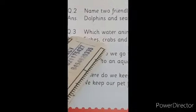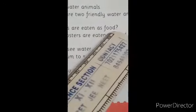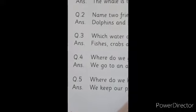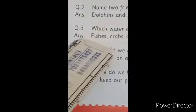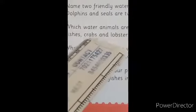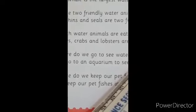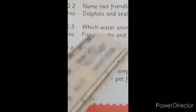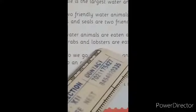Question number 3. Which water animals are eaten as food? Bacchon, paani ka konsa januar hai jo khaya jata hai? Usse hum answer mein padhenge. Answer. Fishes, crabs and lobsters are eaten as food. Bacchon, jo paani ka januar hai khaya jata hai, uska naam hai fishes, crabs and lobsters. Thik hai?